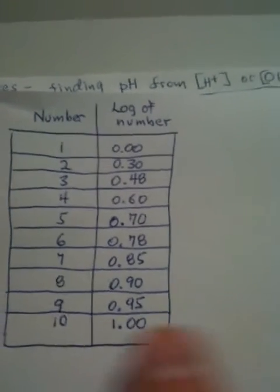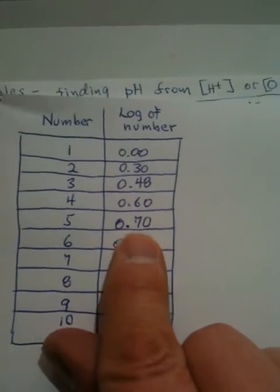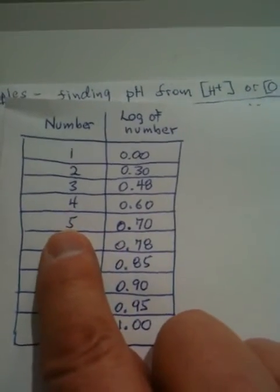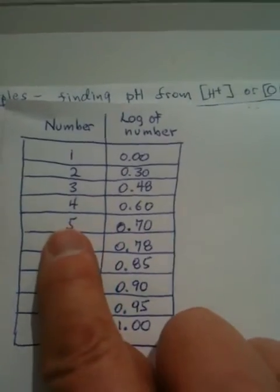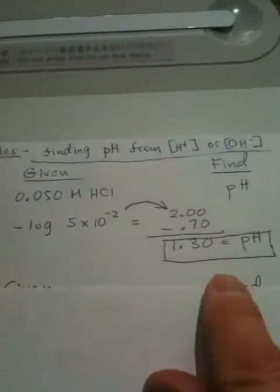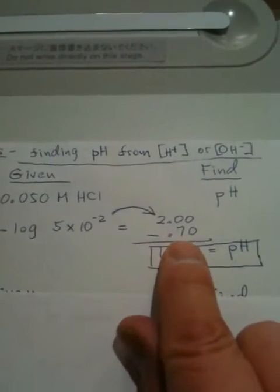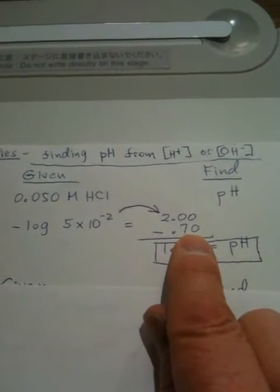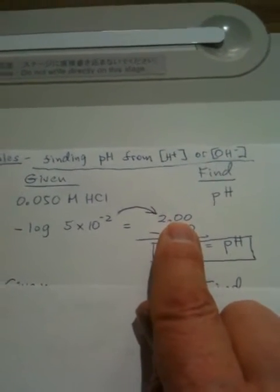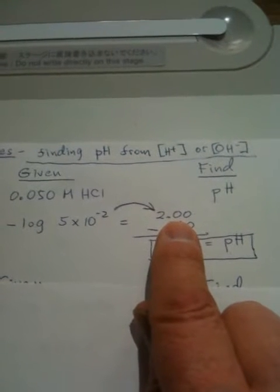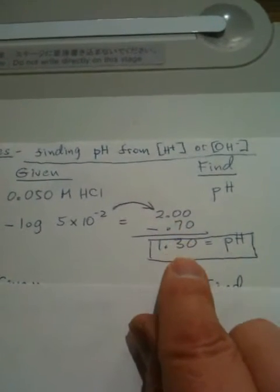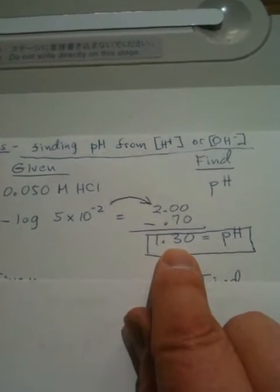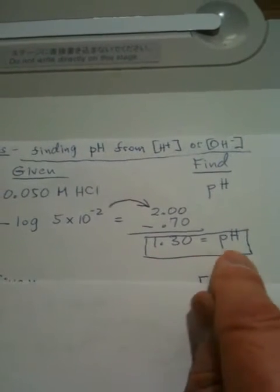Then, we take 5, and we find 5 on our little chart. 5 is, can you see here, we've got 0.70. That's the value of the logarithm of the number 5. So, let's go back over here now, and we see that the 0.70 is put in here as a minus number to be subtracted from the power of 10, changed into a regular number. And, the number that we wind up with, 1.30, becomes our pH.